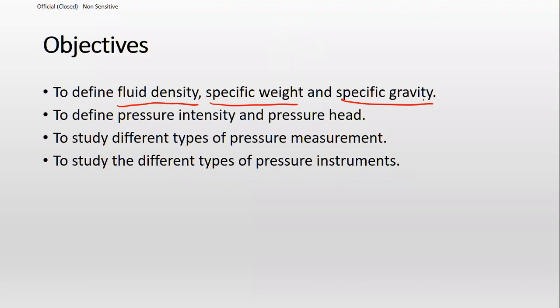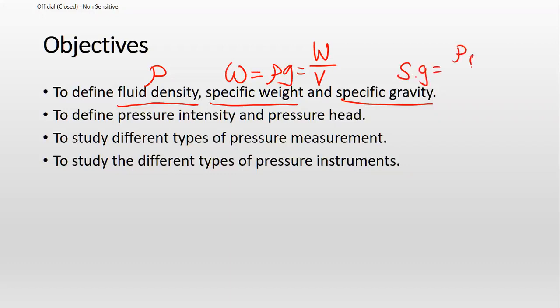These three terms have been discussed before in Chapter 1. To recap: density is represented by rho. Specific weight is omega, also given by rho·g, or weight over volume. Specific gravity is given by Sg — the formula is the density of your fluid divided by the density of water at 4°C, which is essentially 1000. These are properties we will use to calculate pressure later on.